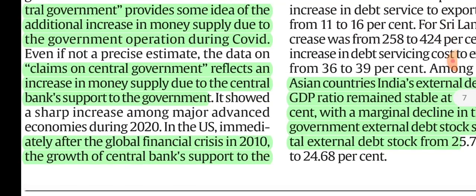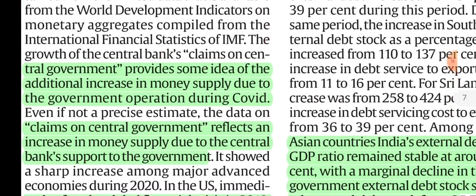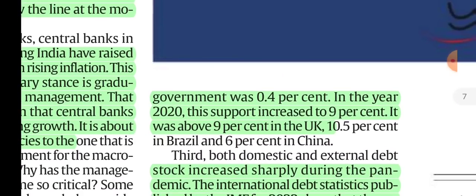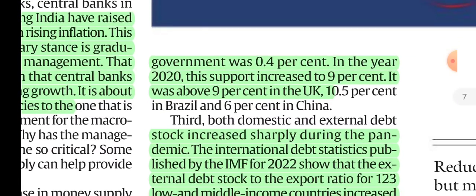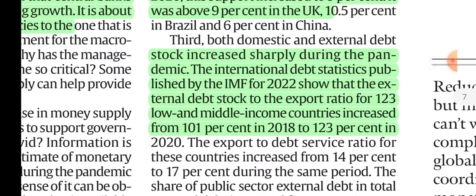Even if not a precise estimate, data on central bank claims on central government reflects an increase in monetary supply due to central bank support to the government. In the US after the global financial crisis in 2010, the central bank provided 0.4%. In 2020 during the pandemic, it was 9% in the US and UK, 10.5% in Brazil, and 6% in China.